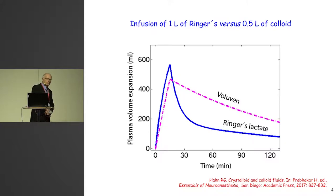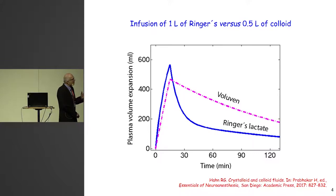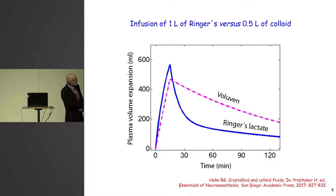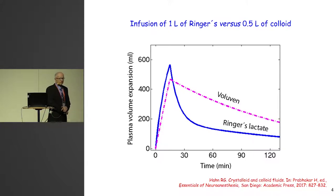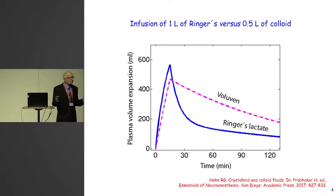As soon as we turn off the infusion, the volume expansion levels off very, very fast for the Ringer's lactate — though it does take some time. If we end at 15 minutes, the distribution function ends about at 45 minutes. So it takes 30 minutes for this fluid to distribute. That is a bit of a surprise to me — I thought it was a very quick distribution process, but it takes half an hour.